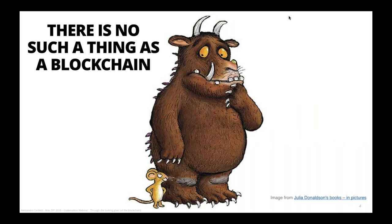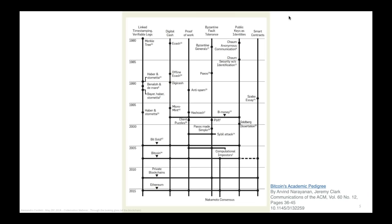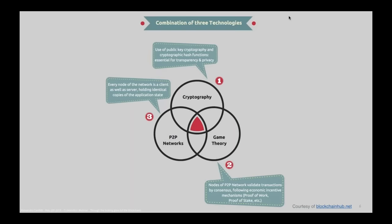First of all, let's start by saying that there is no such thing as blockchain. Blockchain is an umbrella term describing several technologies that were put together and assembled in order to make them work. The first successful implementation of those technologies that we now call blockchain was Bitcoin in 2009. Today we will focus on the two most relevant open-source implementations: Bitcoin and Ethereum. Ethereum was the second successful one, in 2015.